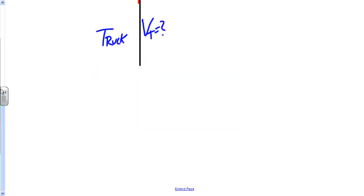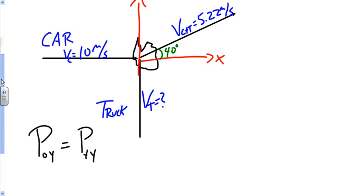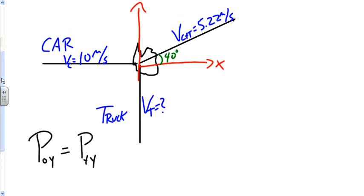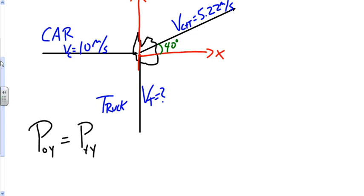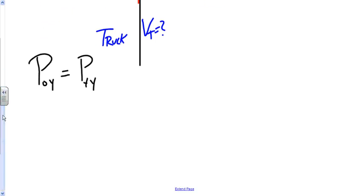Scrolling down a bit. The momentum before in the y direction equals the momentum after the collision in the y direction. Looking up at the car, since the car is moving in the x direction, it has no component of velocity in the y direction. Therefore, for before the collision, the momentum of the car is zero.